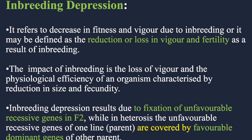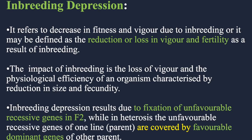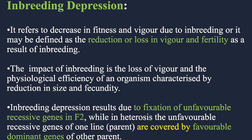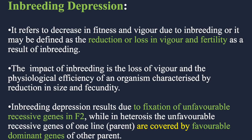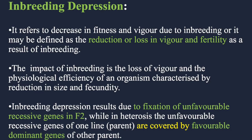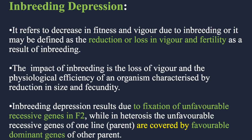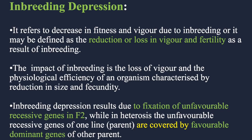Although inbreeding has various advantages of preserving a particular character, it can sometimes also be very lethal — it can decrease fitness and vigor, and it can also reduce or cause a loss in the fertility of the organism. This is the same case in marriages too. When marriages happen within the same family, babies born out of consanguineous marriages are often born with various birth defects. This depression is called inbreeding depression.